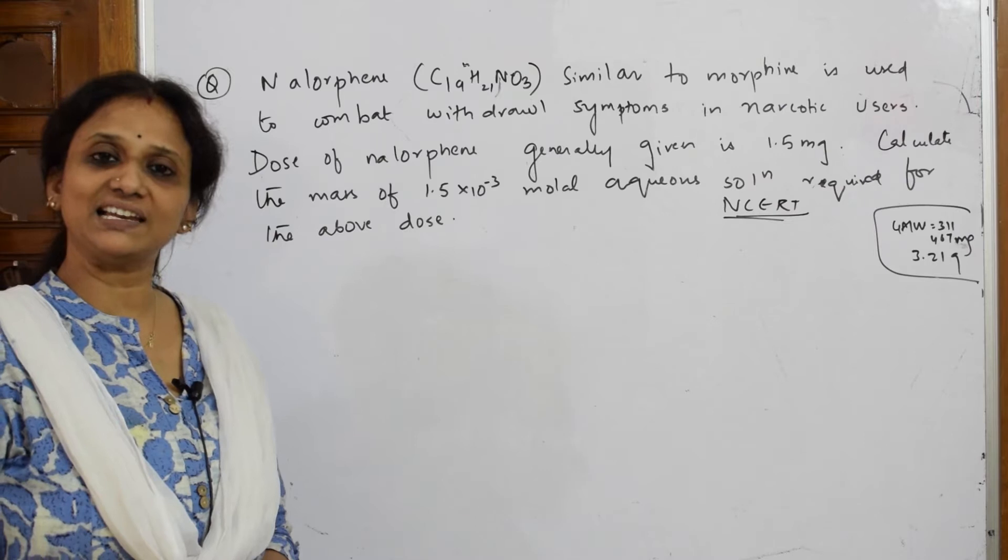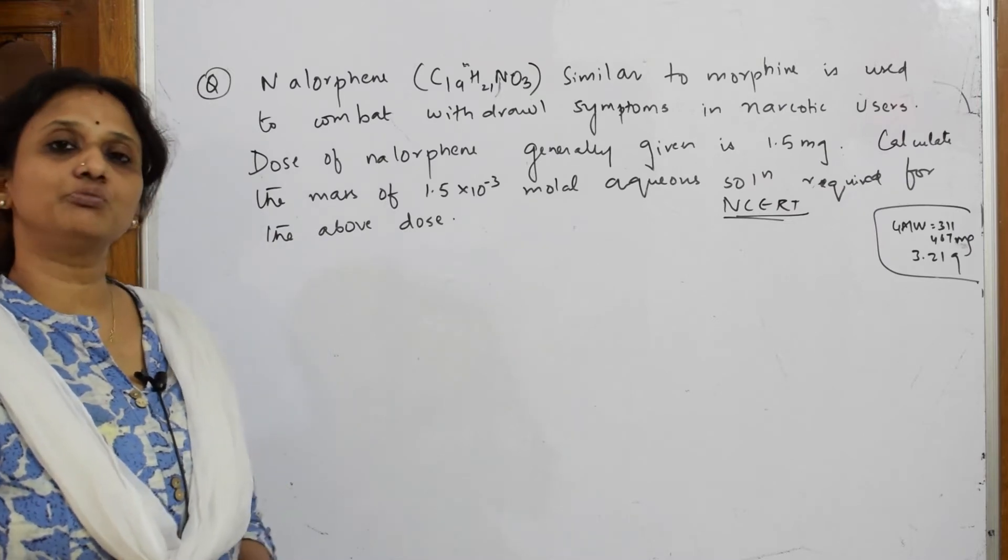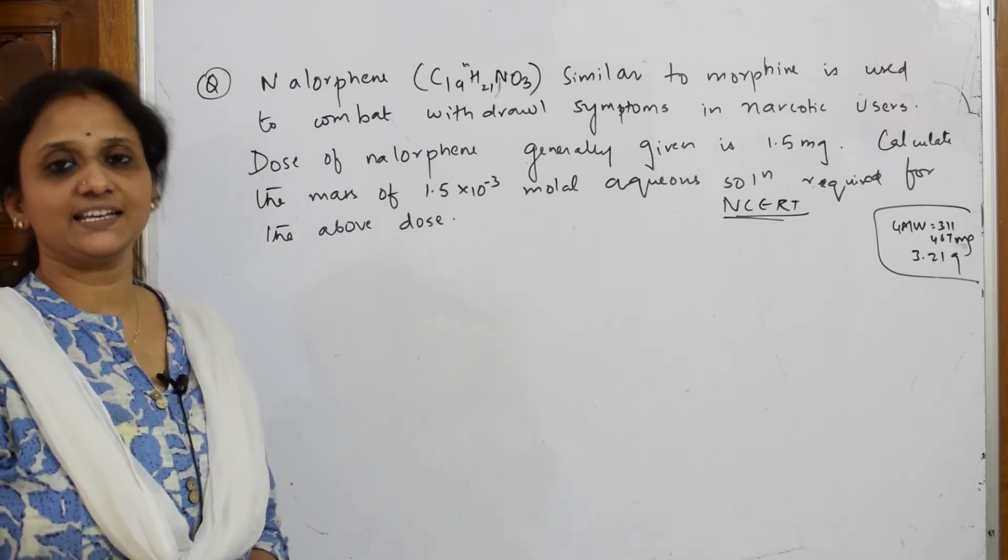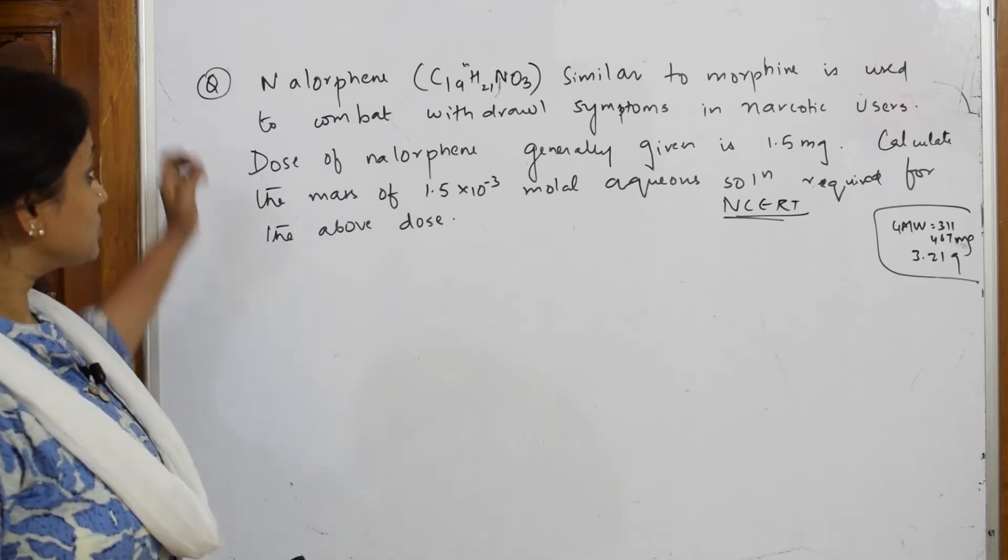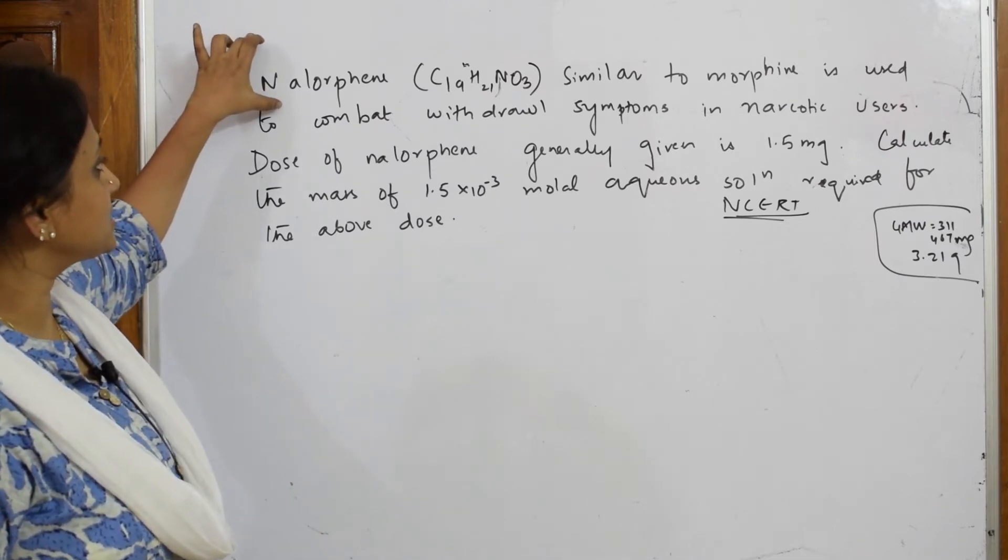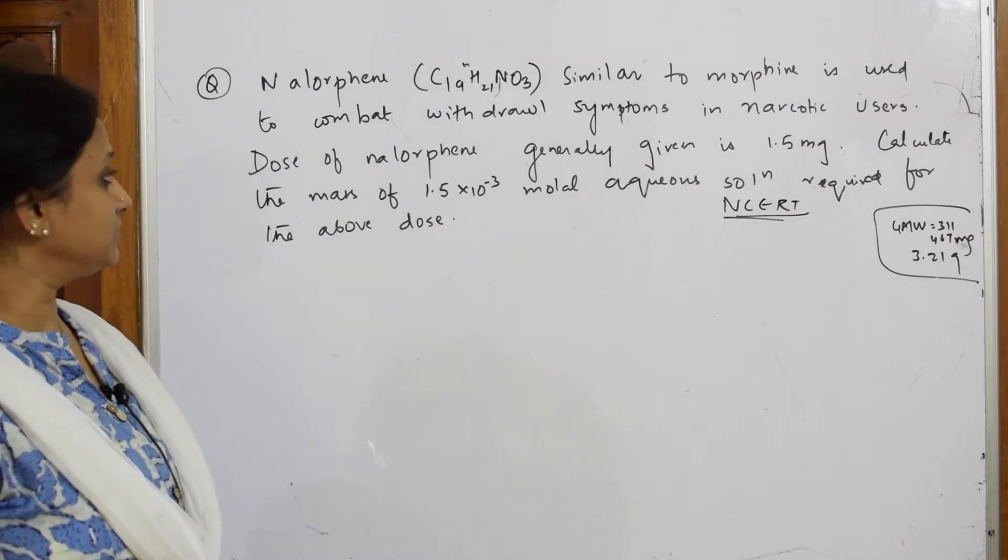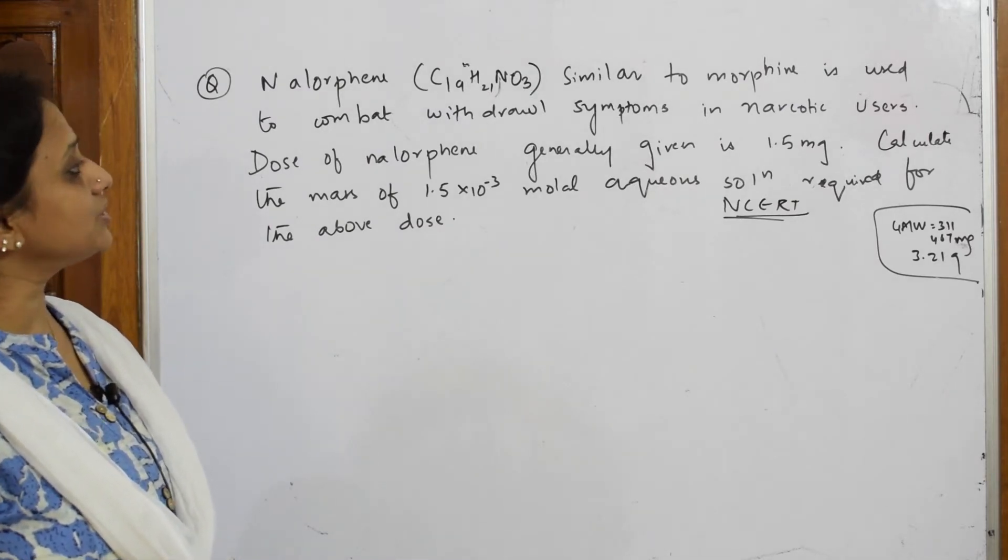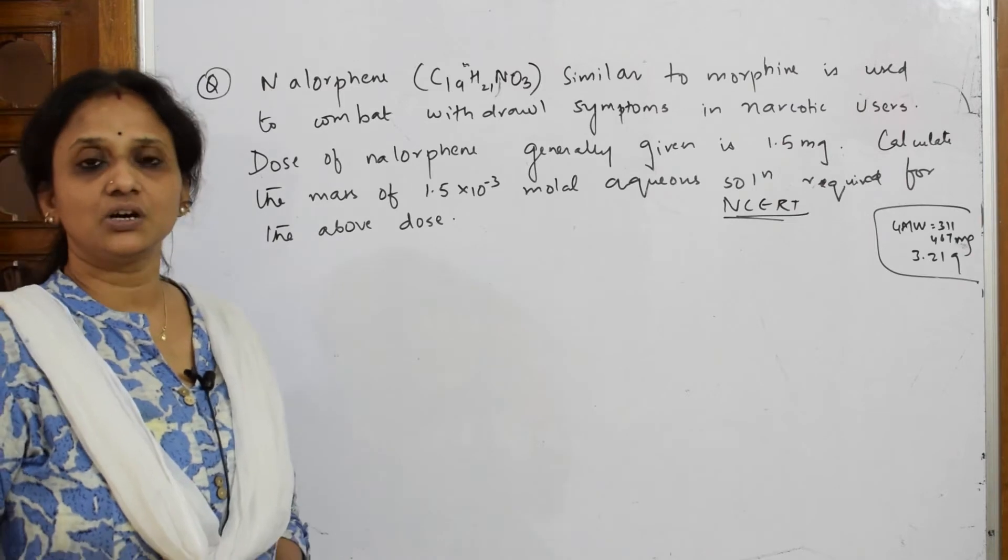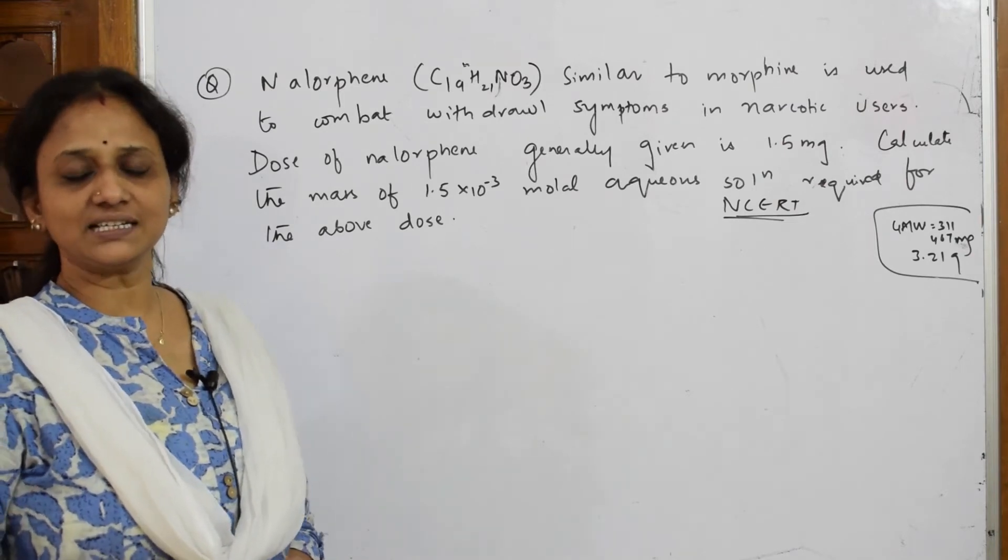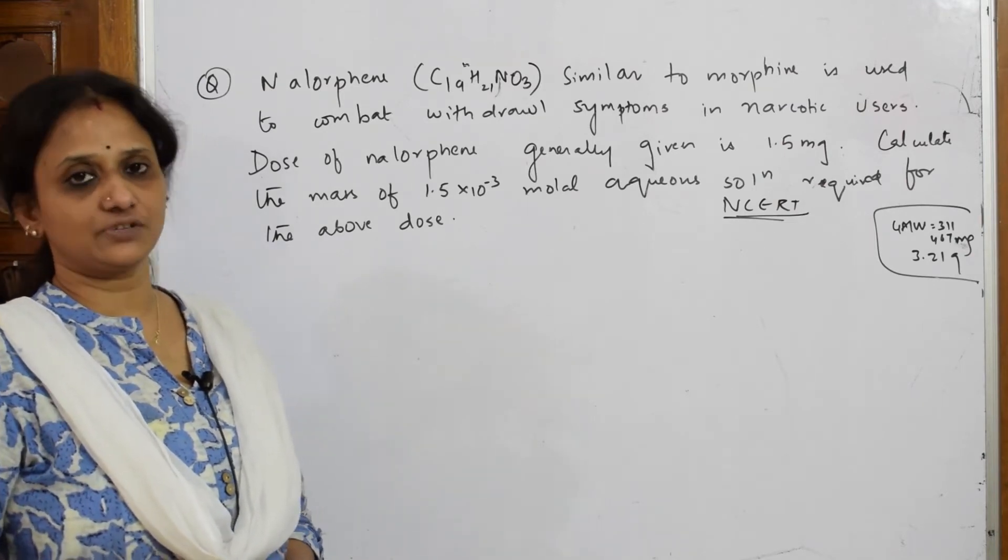Molality is the number of moles of solute dissolved in one kilogram of the solvent. The question says nalorphine, similar to morphine, is used to combat withdrawal symptoms in narcotic users. The dosage of this medicine is given to drug addicts.